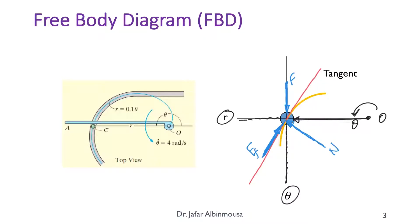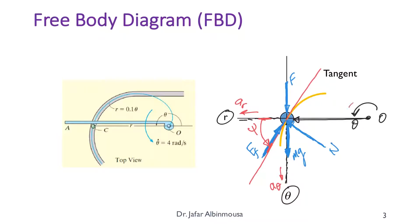We also have the weight, which is always acting downward and in this case happens to be along the transverse direction — this is Mg. Along one line we have a_theta, along the other we have a_R. The angle psi is measured from the radial line all the way to the tangent in the sense of theta.